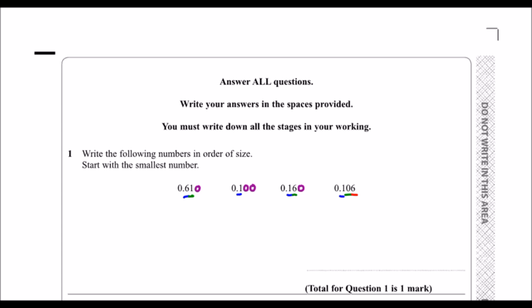So the smallest one is 0.1, then we've got 0.106, 0.16, and then 0.61.